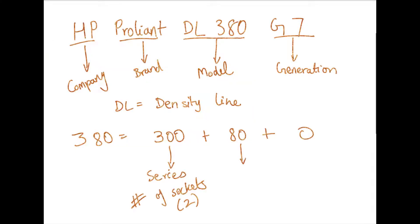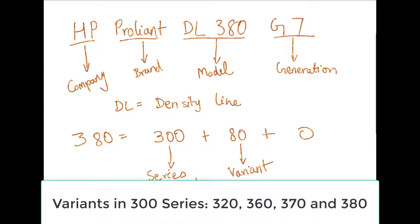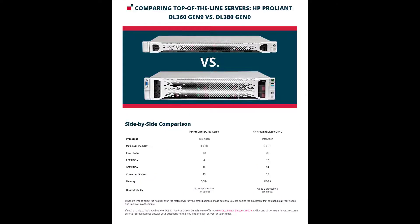The next part of the server name, which is 80, is a variation within the 300 series. In the 300 series, we actually have four variants: 320, 360, 370, and 380. You might ask what's the difference between these variants — usually it has some simple differences in terms of hardware. Here you can see a side-by-side comparison of the DL360 and DL380 models. It's largely the same except for some changes in hard disk support and upgradability.